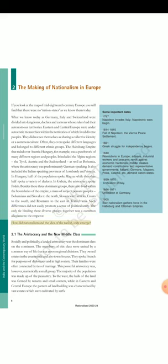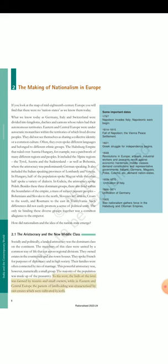How did nationalism and the idea of the nation-state emerge? Section 2.1: The Aristocracy and the New Middle Class. Socially and politically, a landed aristocracy was the dominant class on the continent. The members of this class were united by a common way of life that cut across regional divisions. They owned estates in the countryside and also townhouses. They spoke French for purposes of diplomacy and in high society. Their families were often connected by ties of marriage. This powerful aristocracy was, however, numerically a small group. The majority of the population was made up of the peasantry. To the west, the bulk of the land was farmed by tenants and small owners, while in Eastern and Central Europe the pattern of landholding was characterized by vast estates which were cultivated by serfs.